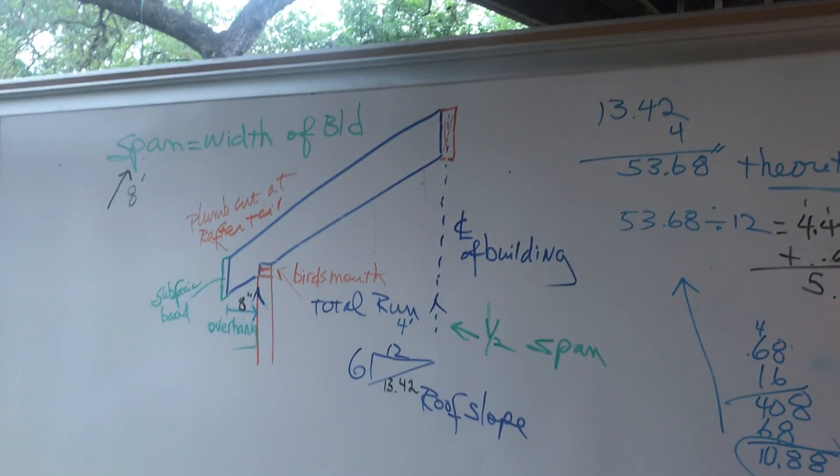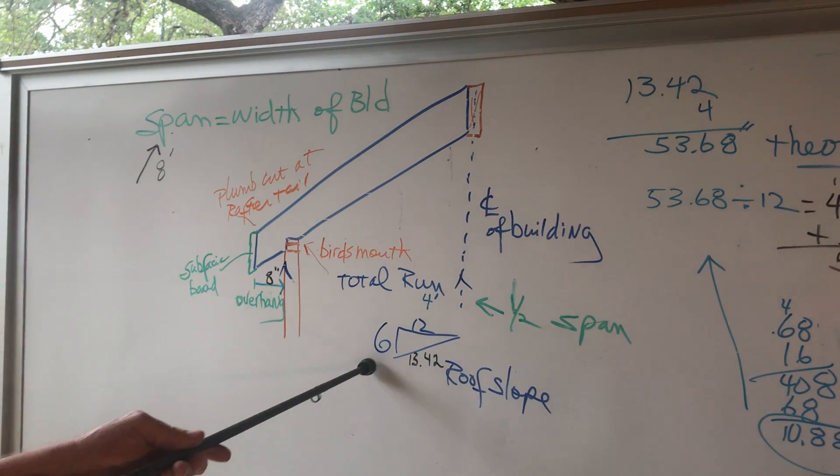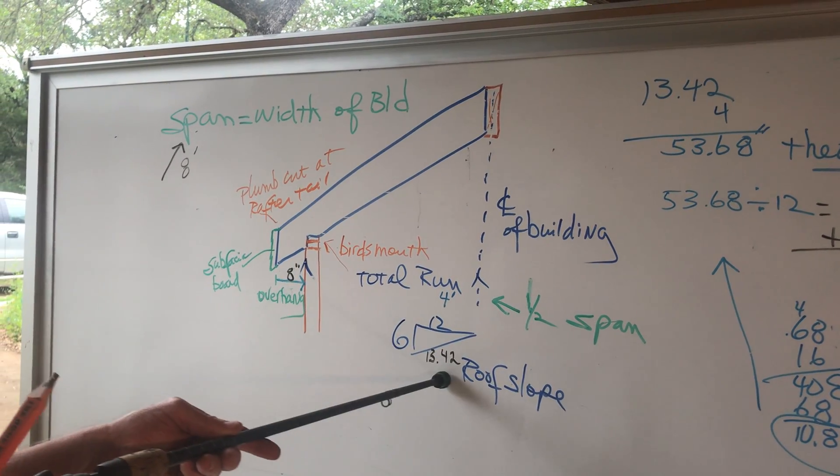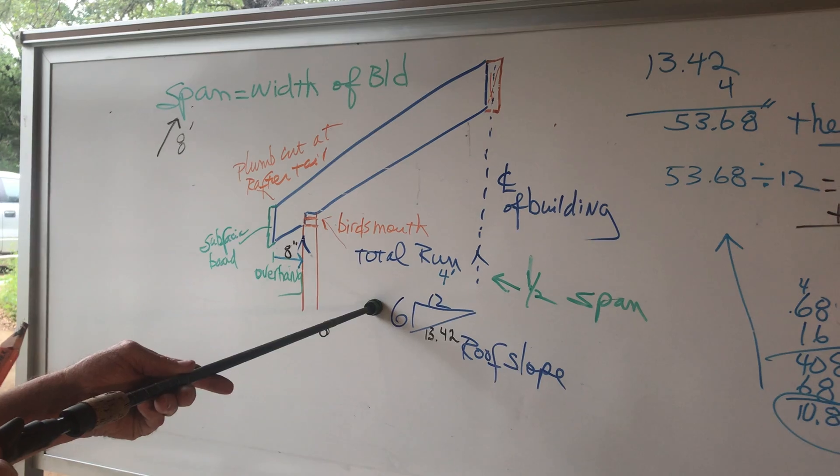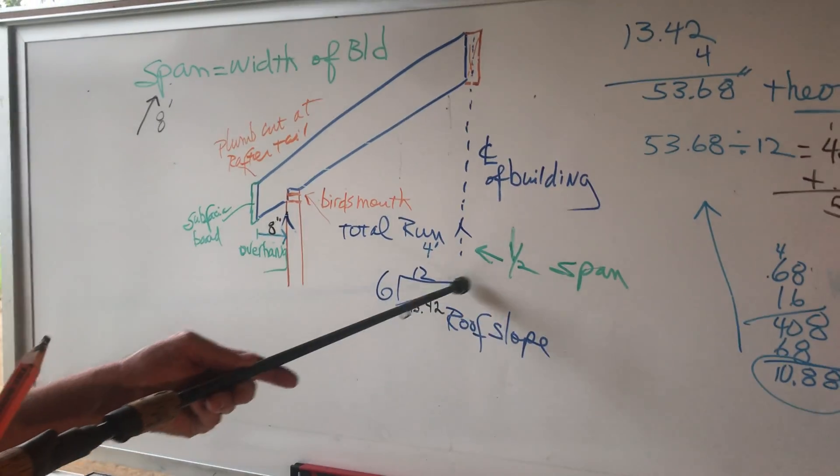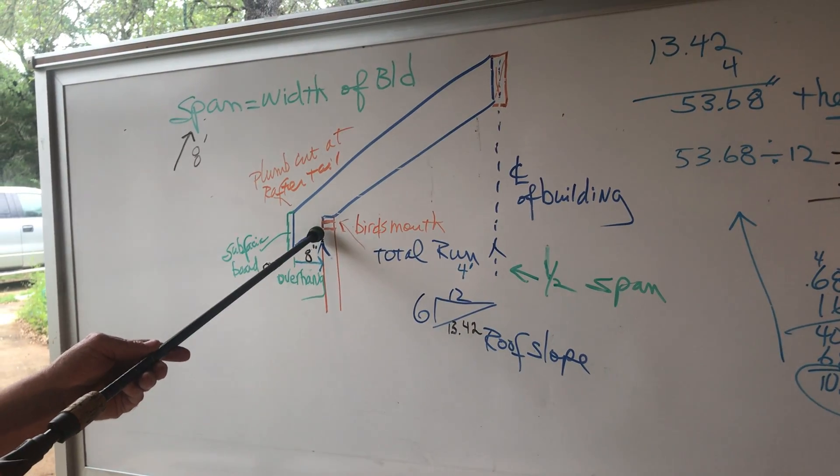Now, the unit rise can change. So the unit rise can be 5. If this is 5, then that would be 13. If that was 8, that would be 14.42.